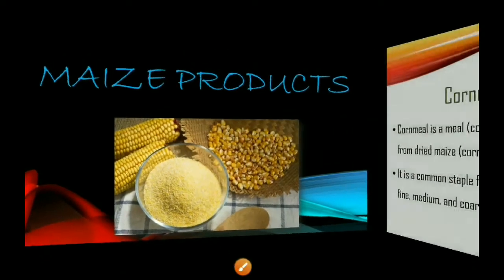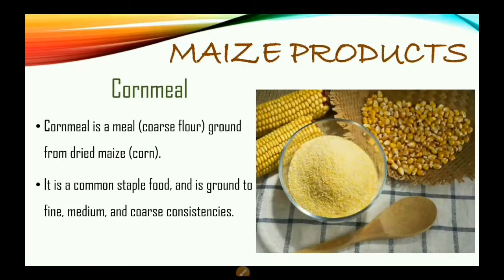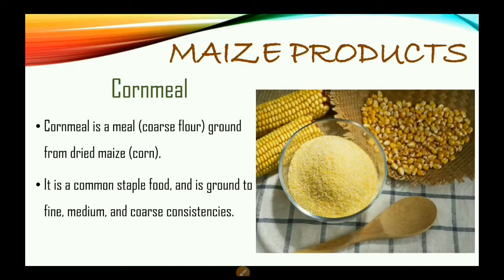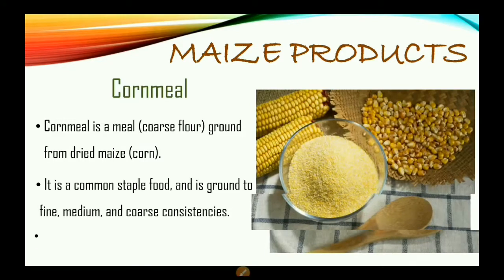Now let us look at the maize products. The first one is cornmeal. Cornmeal is a coarse flour ground from dried maize, or dried corn. It is a common staple food and is ground to fine, medium, and coarse consistencies.